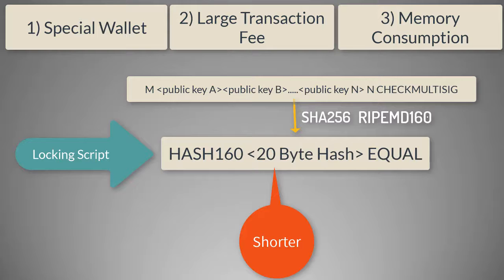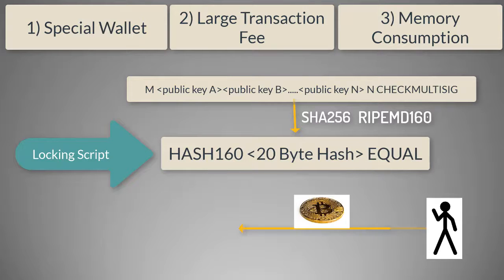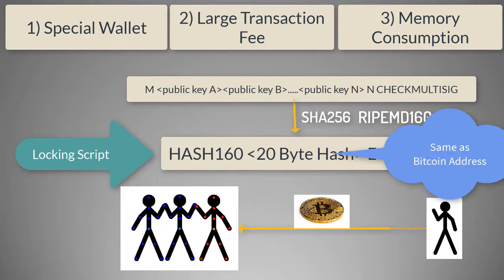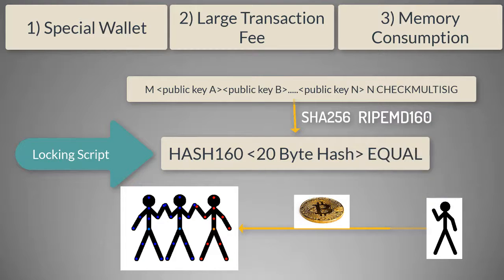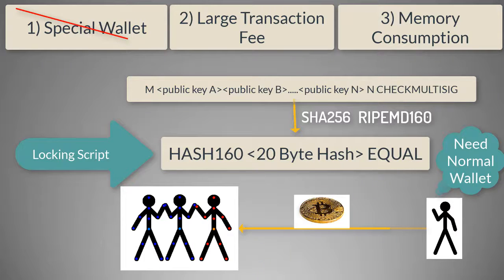In fact, the P2SH locking script is no different than a locking script of a single Bitcoin address, except that here, instead of a public key hash, we have the hash of the script. But for a sender who wants to send Bitcoin to this script, it is seamless and no different from sending Bitcoin to a normal Bitcoin address. So the sender does not need any special wallet because the locking script has just a 20-byte hash, very similar to a Bitcoin address. This is the reason this hash is also called a P2SH address.